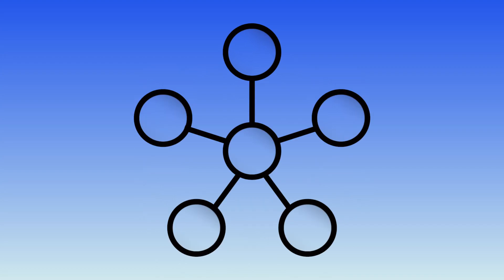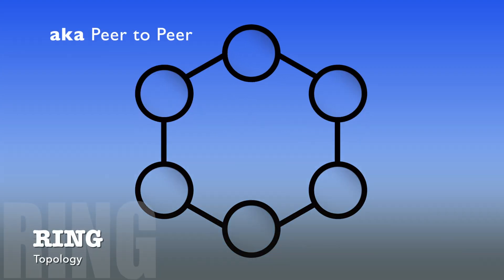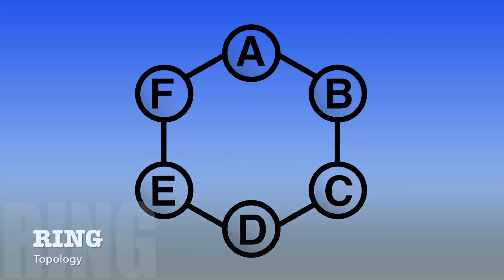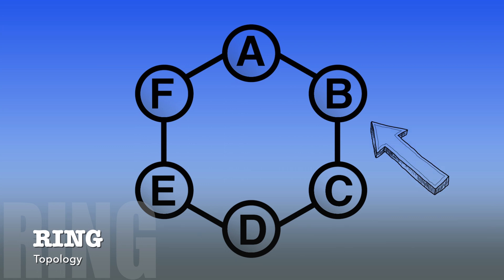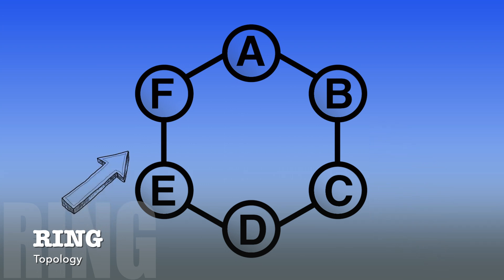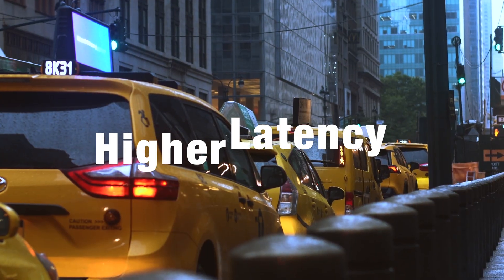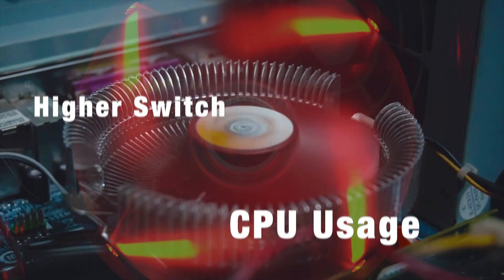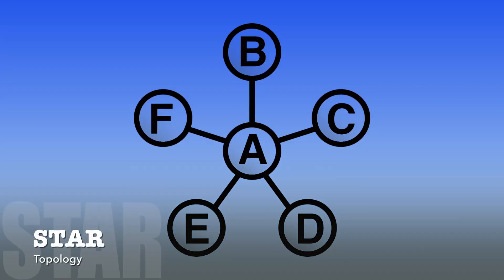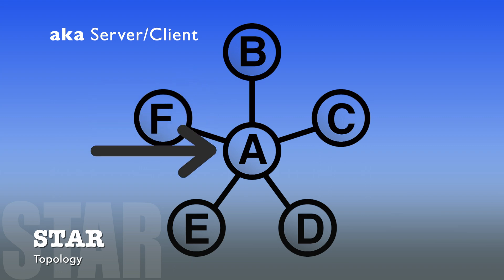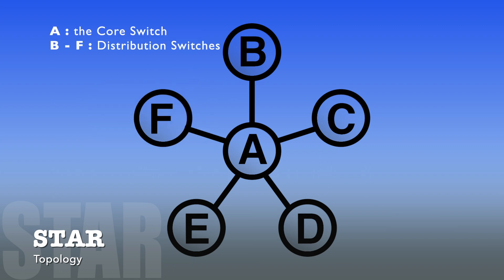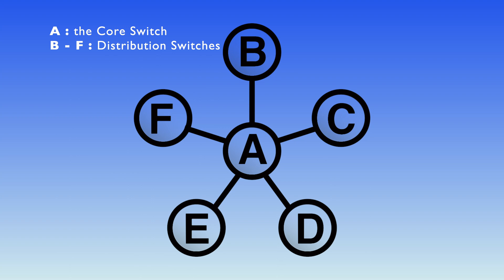For the ring topology, each network switch is connected to another peer network switch. Traffic can flow in both directions, but packets coming from a device on switch A going to another device on switch D will need to pass through switches B and C, or through switches E and F. This will work but may experience higher latency, higher switch CPU usage, and depend on many other switches. For the star topology, each distribution switch or stack is directly connected to the core switch or stack and only relies on its direct connections to the core stack or switch — lower latency, higher bandwidth, no dependencies on other distribution switches.